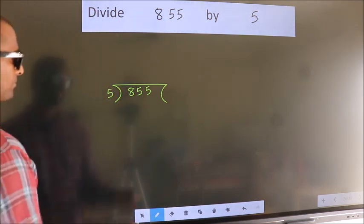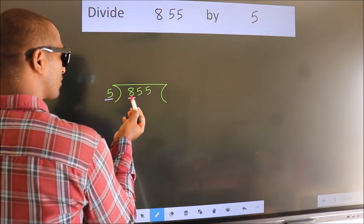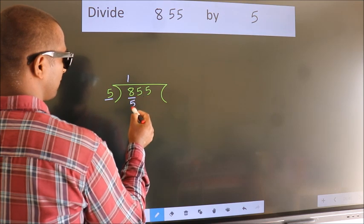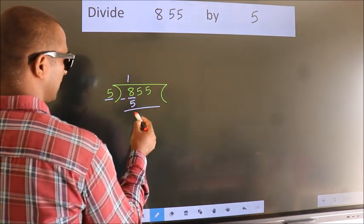Next, here we have 8, here 5. A number close to 8 in 5 table is 5 once 5. Now, we should subtract. We get 3.